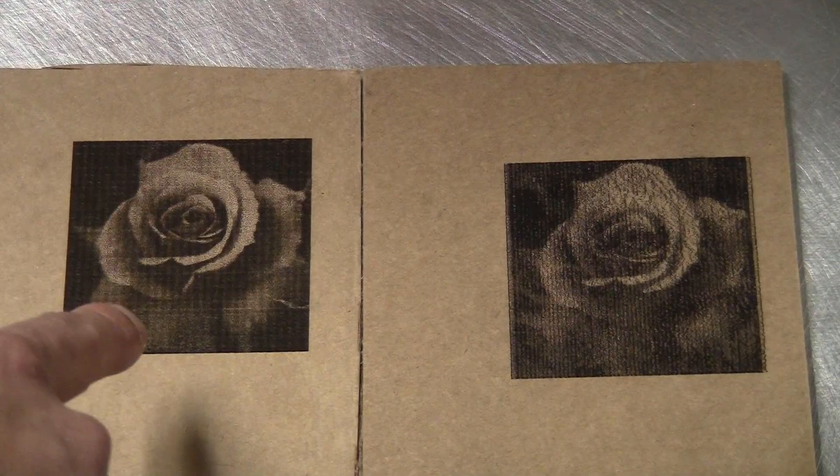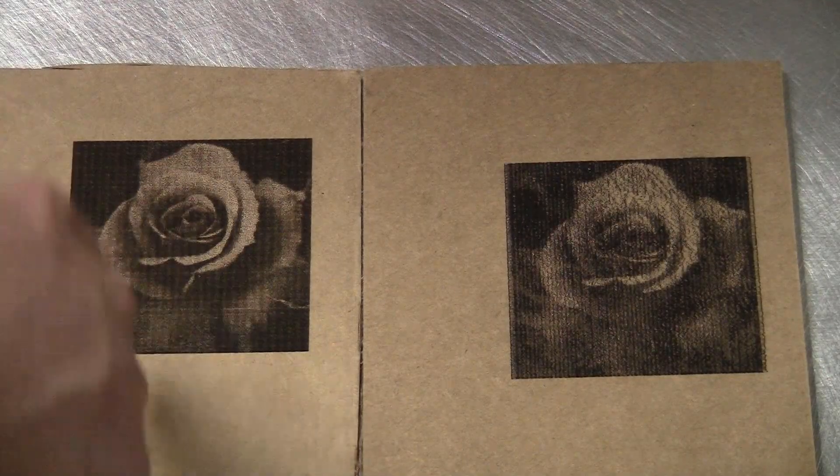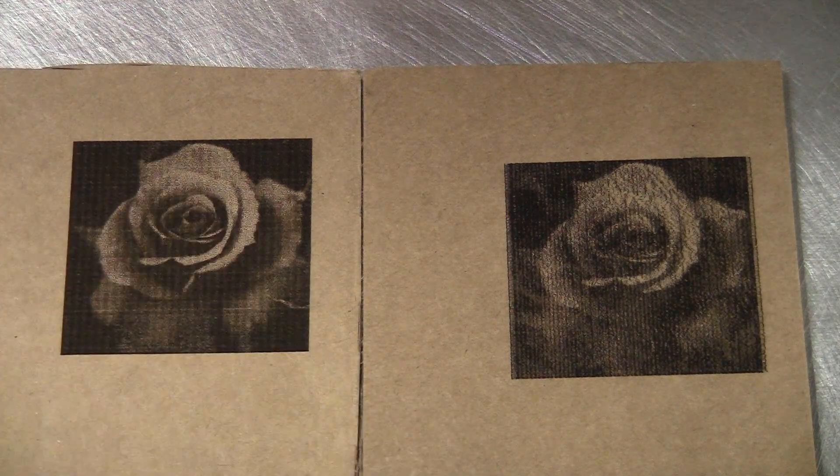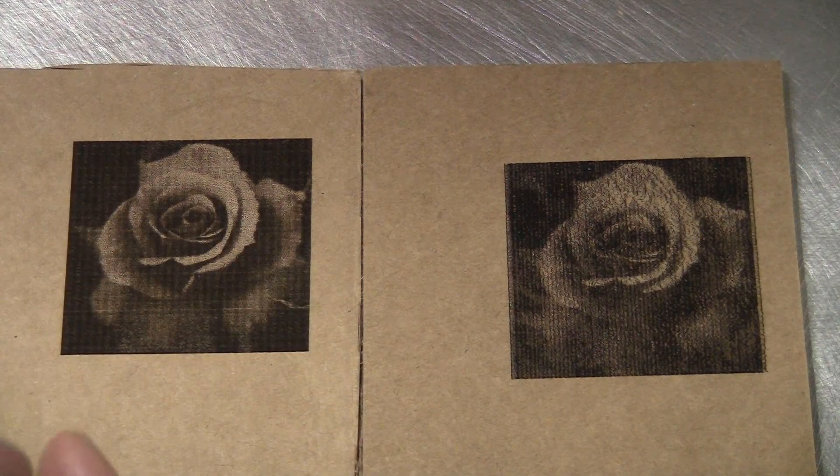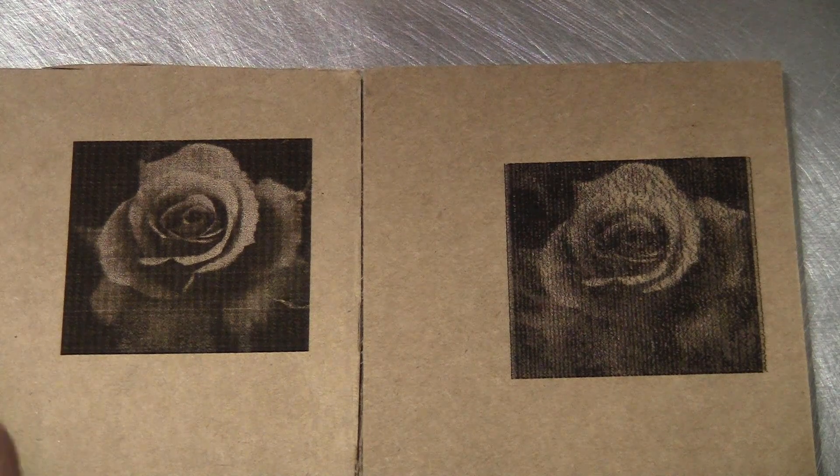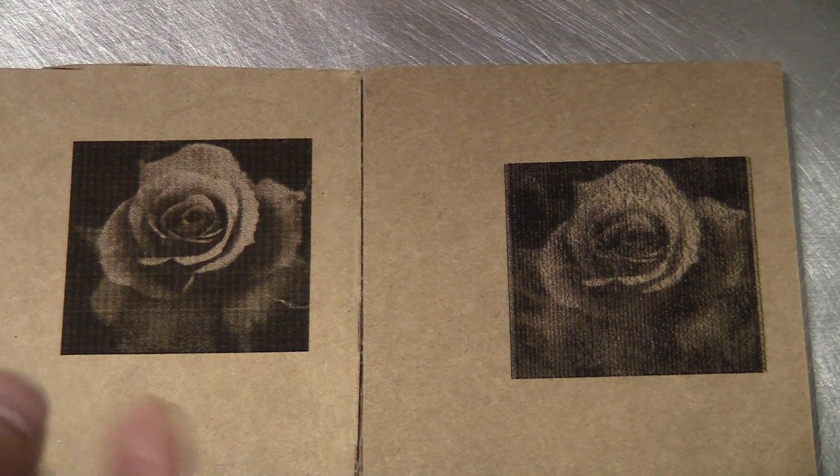As you can see here, there's a lot of vertical lines on this picture and the spacing between the lines are exactly the pitch of the GT2 belt. So after a bit of research, I think I can explain why.